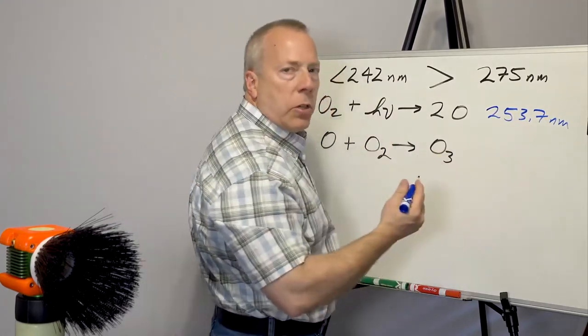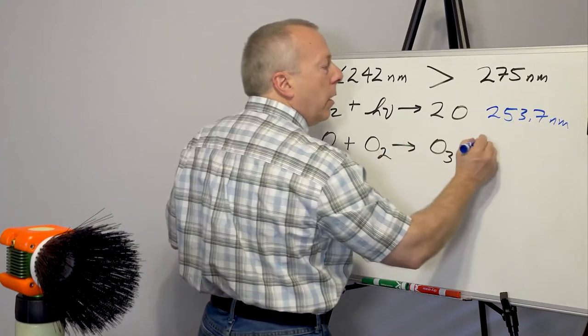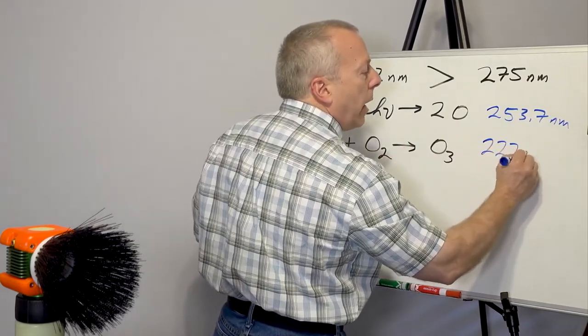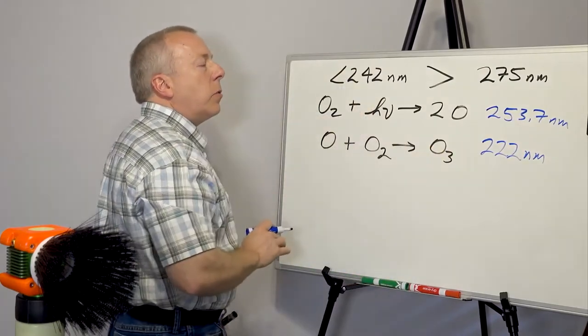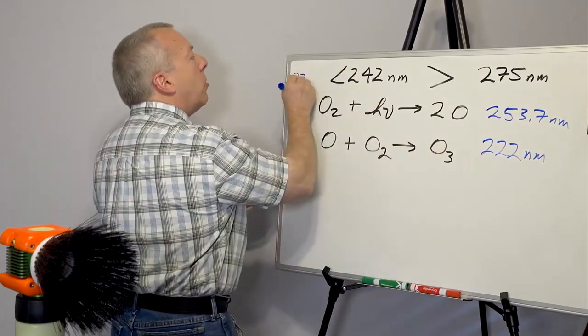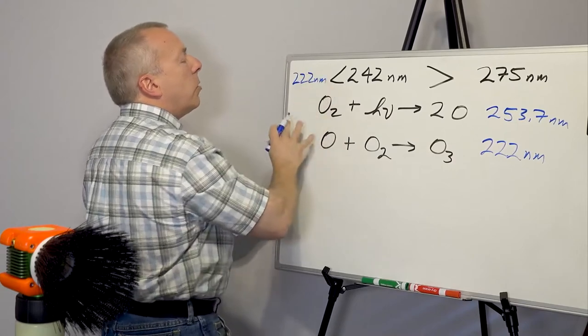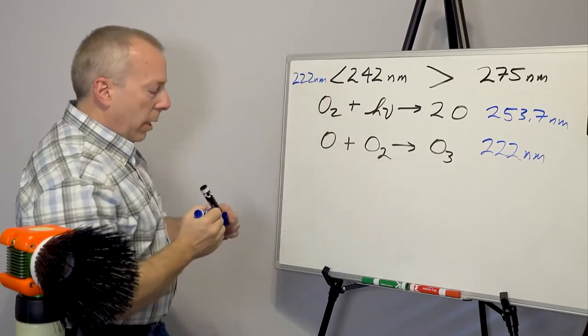However, the excimer system that's becoming more popular is at 222 nanometers. It is less than 242, so it's down here in this range at 222 nanometers. So it actually will generate the ozone.